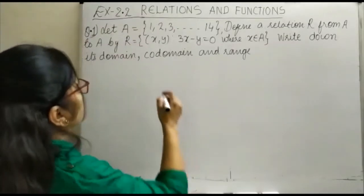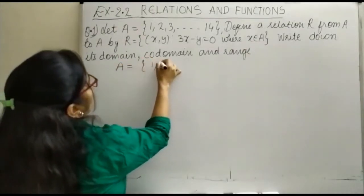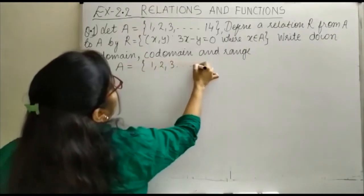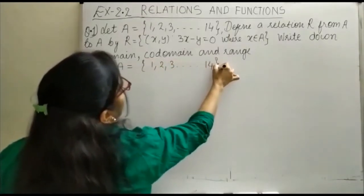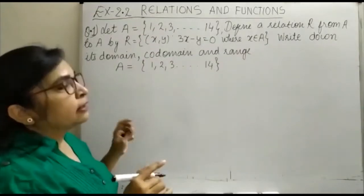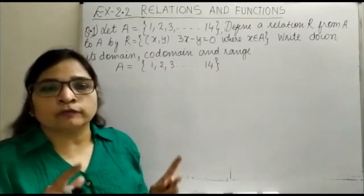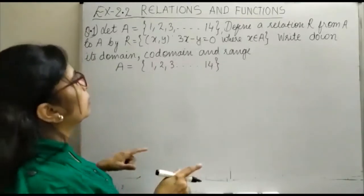Let A, we are having the set A here. You can see our A is having elements 1, 2, 3, up to 14. Define a relation R from A to A by R is equal to ordered pairs (x,y). The relation R आपका A cross A से होगा.